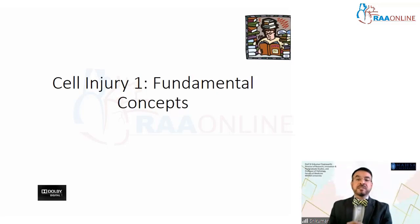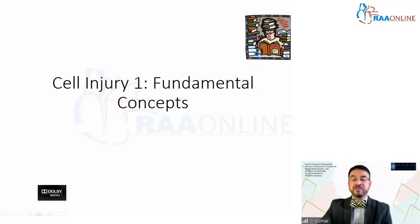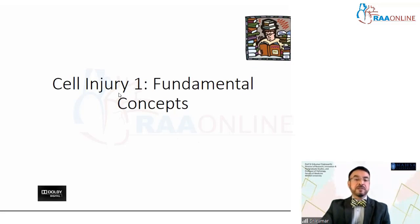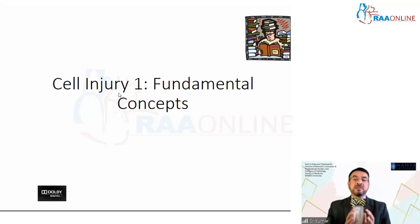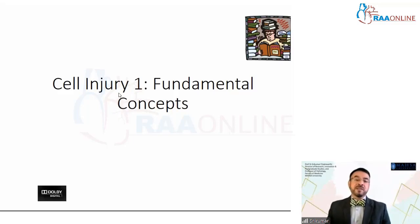Today's lecture is the first in a series of general pathology lectures, and I am going to talk about cell injury — fundamental concepts. I will start with a brief warm-up on how our body functions, then move into the actual fundamentals of cell injury: the causes, the mechanisms, and what happens inside the cell. I will cover reversible injury in this session, and in the next session I will move on to irreversible injury and the two patterns of cell death — apoptosis and necrosis, and types of necrosis. These are the learning objectives of the first two sessions.